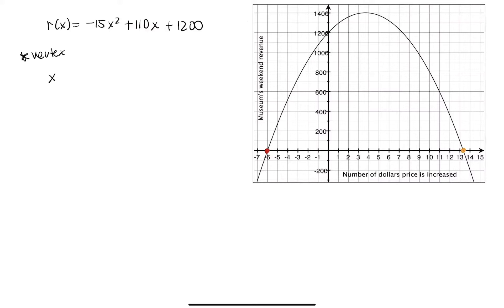Now, to find the x value of the vertex, you need to look at this formula, negative b over 2a. That will give you the x value. And again, let's rewrite r of x. I should have left that here. So that's negative 5 times negative 3x squared plus 22x plus 240.